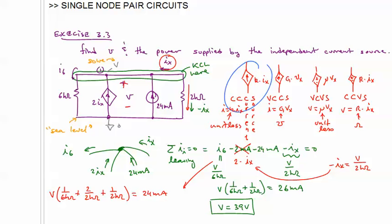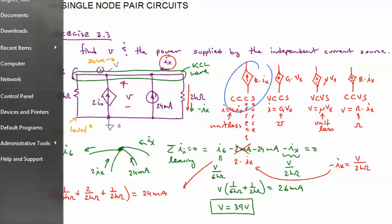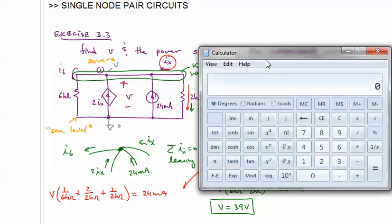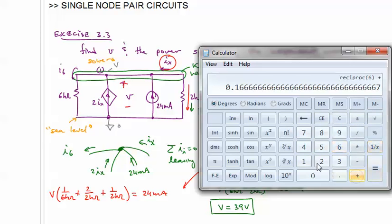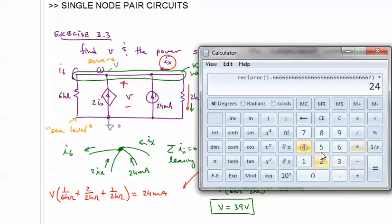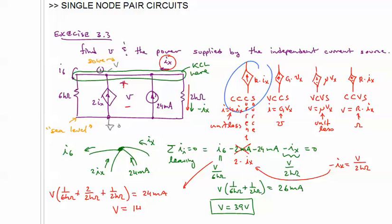Equal to, and we'll bring the 24 milliamps over to the other side. So let's bring up our calculator. So we will have 6 inverse plus 1 inverse plus 2 inverse equals inverse times 24 equals 14.4.